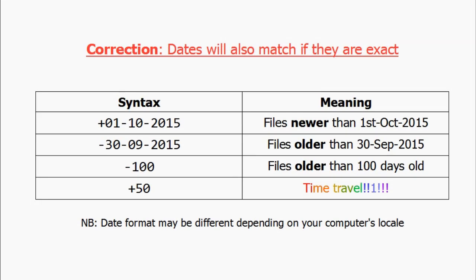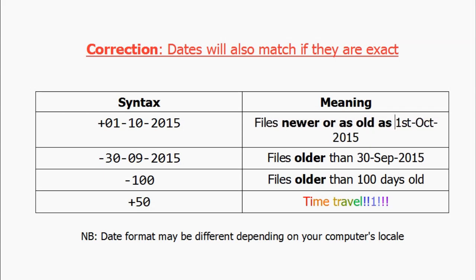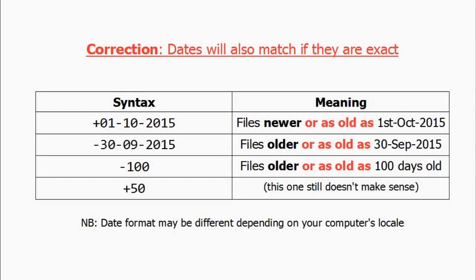Here's a quick correction: when date comparisons are performed, the exact date is also considered valid. What this means is, take for example the syntax you see in the topmost row in the table — files with a last modified date falling on exactly the 1st of October will also be affected by the command.